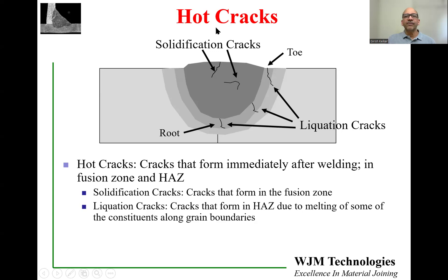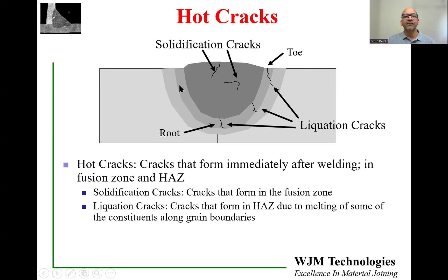There are two different types of hot cracks. Hot cracks are cracks that form immediately after welding — as soon as the weld cools down to room temperature, the cracks are already there. Some cracks might be visible from the surface, but for some of them you may have to look inside, which can include x-ray or cross sections. Here I'm showing you a cross section of a weld where you can see cracks in the fusion zone — these are solidification cracks, and we have covered that topic in a separate video already posted on this YouTube channel.